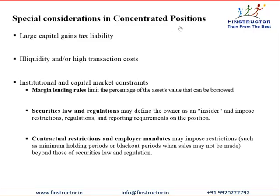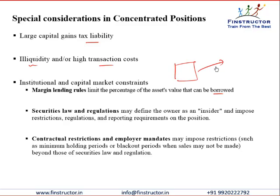The special considerations include a large capital gains tax liability that has to be considered, illiquidity and high transaction costs if we try to liquidate the position too quickly, and thirdly, institutional and capital market constraints that restrict our ability to monetize or sell off this asset. Margin lending rules limit the percentage of the asset's value that can be borrowed. An easy way to monetize without selling is to go to a bank, leave the asset as collateral, retain the upside, and just borrow against the asset — though that borrowing will normally be a much smaller percentage of the total value.